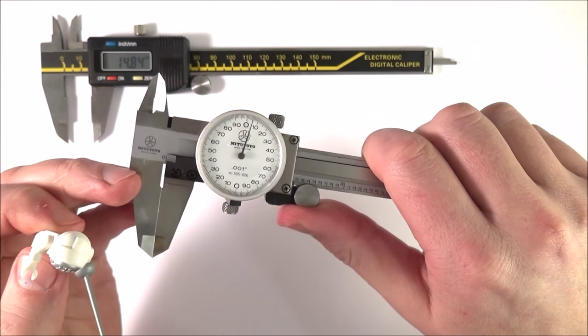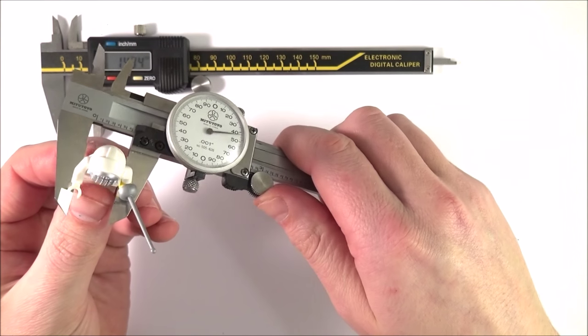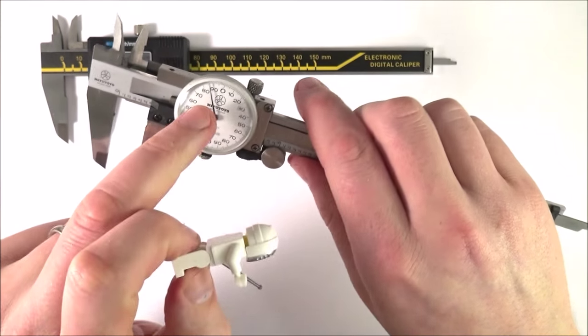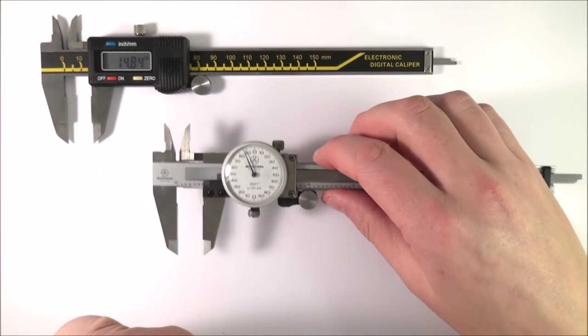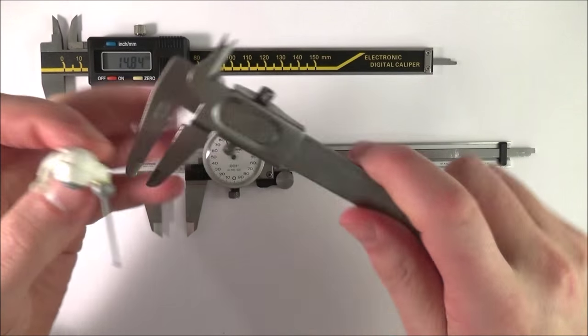There are other sorts of calipers that we have as well. I also found this one here that has a rather nice dial. This one basically moves back and forth—we can use it to measure the diameter of an object. By reading off the dial here we can actually get a measurement. But there's another one which is a lot more complicated and that's what this video is really all about.